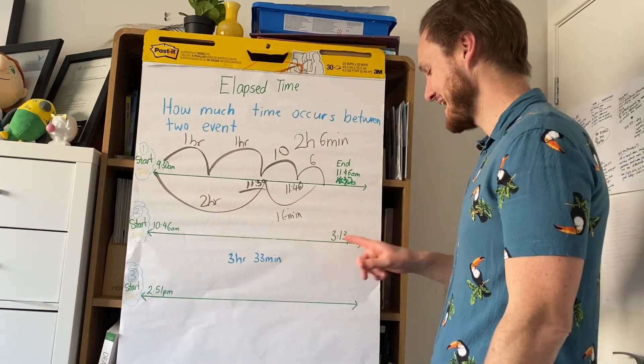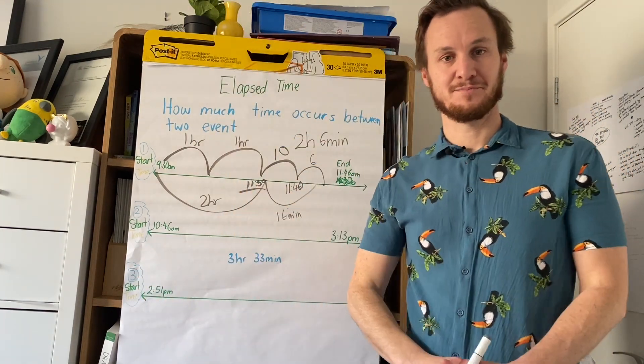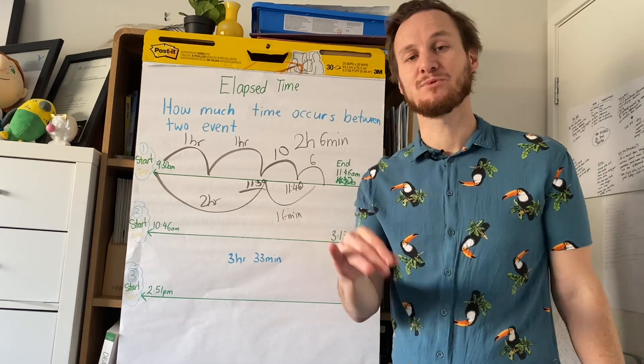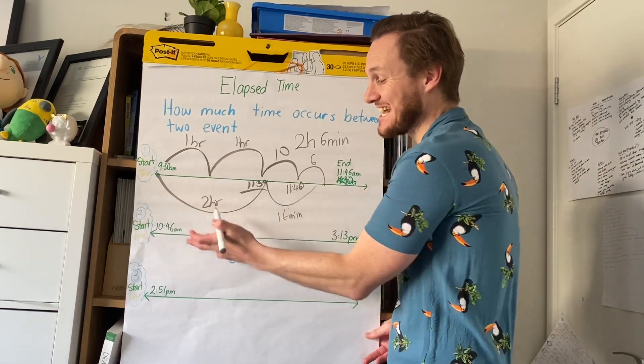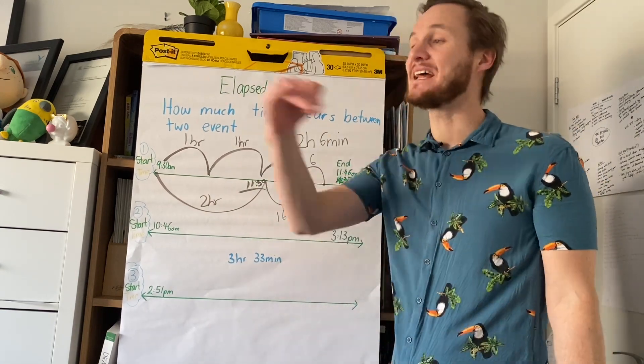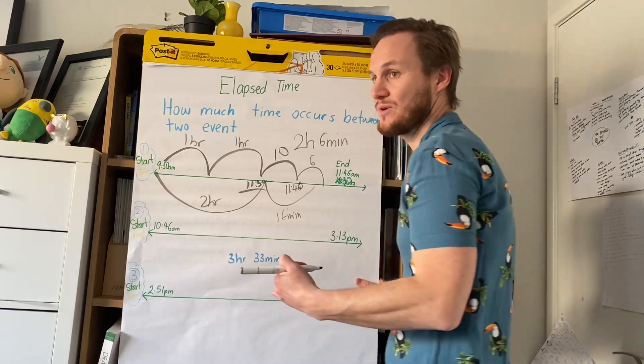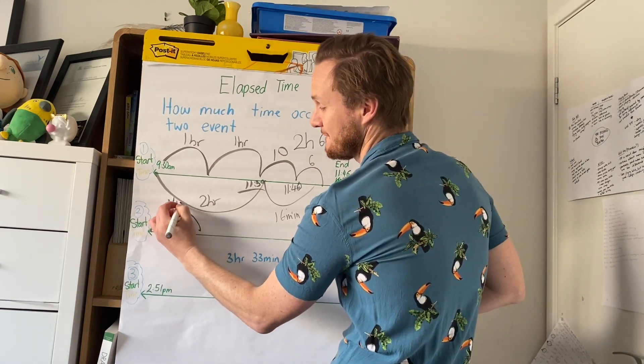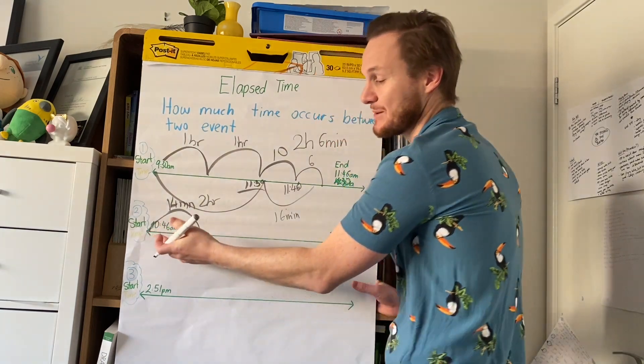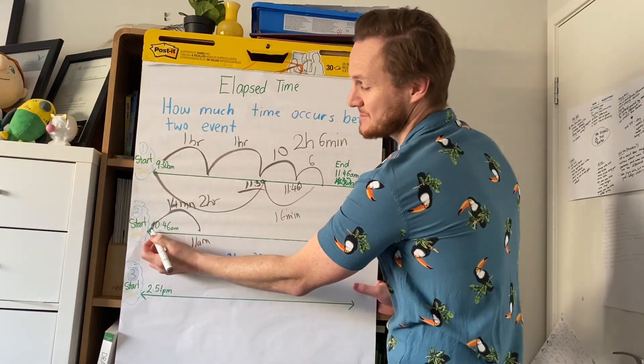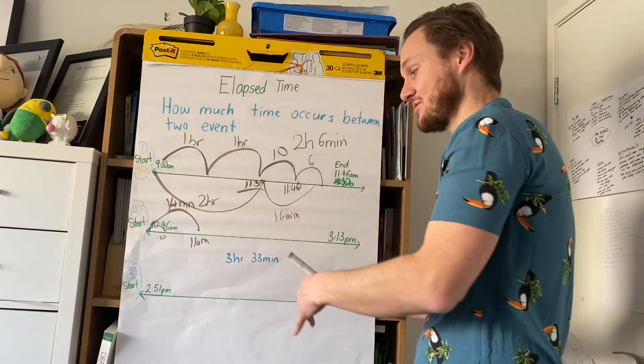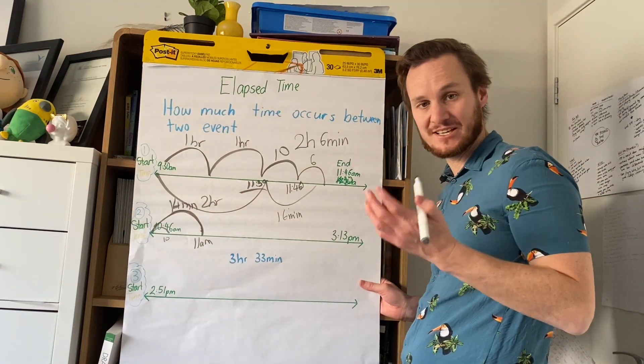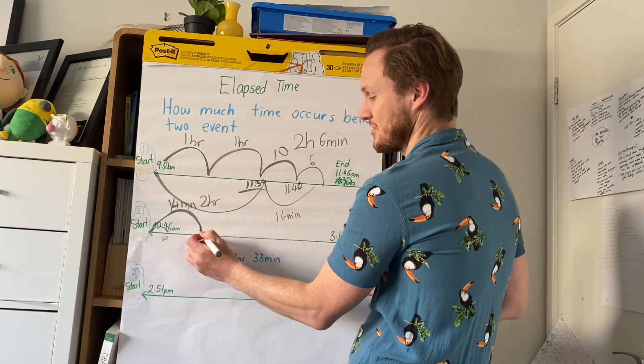The next one says it starts at 10:46 and ends at 3:13. How long did the event go for? So it's a little bit trickier. But what I want you to do is there's multiple ways you could do it, but what I would like to do is jump forward from 10:46 to get to the nearest hour first. I want to get to that nearest hour clean. So from 10:46 to 11 o'clock, it depends. Like I would jump like this and go 14 minutes and now we're at 11 o'clock. I would jump from 10:46 to 11 o'clock. But if you need to jump from 10:46 to 10:50 and then from 10:50 to 11 o'clock, you can also do that. So let's go. Let's jump from 10:46 across to 11 o'clock. Now we're at 11 and it finishes at 3:13. So that's 14 minutes.